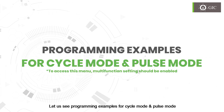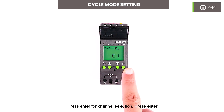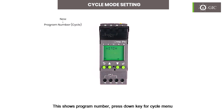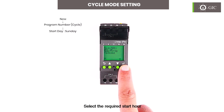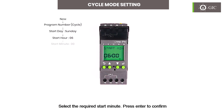Let us see programming examples for cycle mode and pulse mode. Press the ESC key to enter programming mode. Press enter for channel selection and press enter again. 'New' means to start a new program — press enter. This shows the program number. Press the down key for the cycle menu. Select the required start day, start hour, and press enter to confirm. Select the required start minute and press enter to confirm.